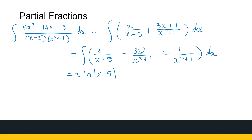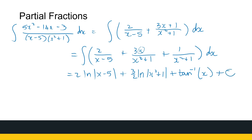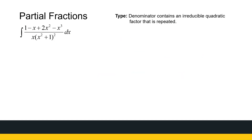The first term is just ln|x minus 5|. The second one uses a u-substitution and gives 3/2 ln(x squared plus 1) — if you're not comfortable, pause and do the substitution yourself. The third term, 1 over (x squared plus 1), is not a ln or u-substitution; it's an inverse trig function, arctan of x. So it's a little bit more work with an irreducible quadratic in the denominator, but it's important to recognize that the numerator takes the form bx plus c.